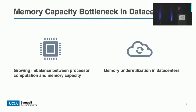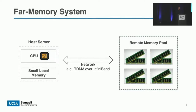Nowadays, the data center has the problem of memory capacity bottleneck. The growth of DRAM memory capacity is slower than that of processor computation, and the memory in data centers is often underutilized, causing a big resource waste. So cloud providers are now thinking how to solve these problems. One of the most promising directions is to use far memory, which can improve resource utilization and has better elasticity.